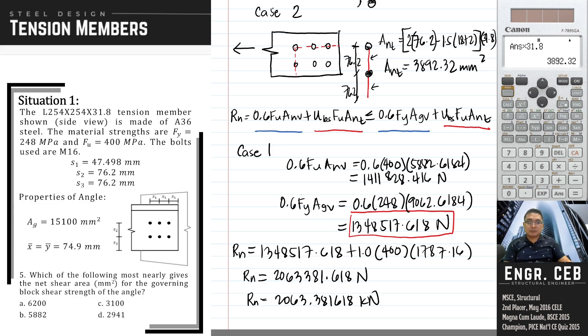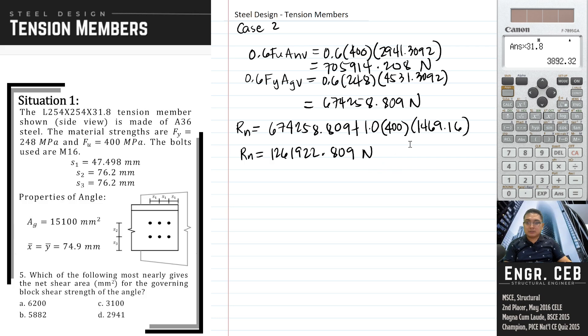Let us revise again the value in this nominal strength. It should be 3892.32. Therefore, we have 2231186.809 Newton.